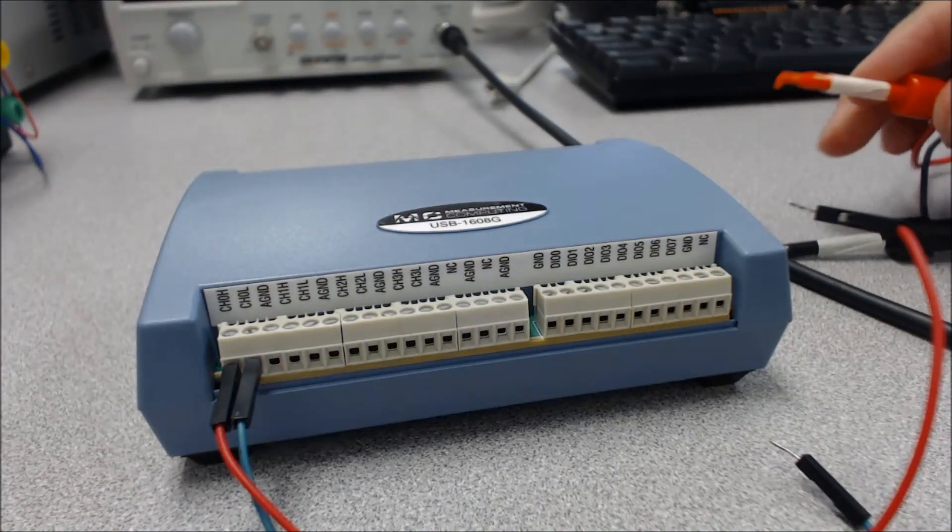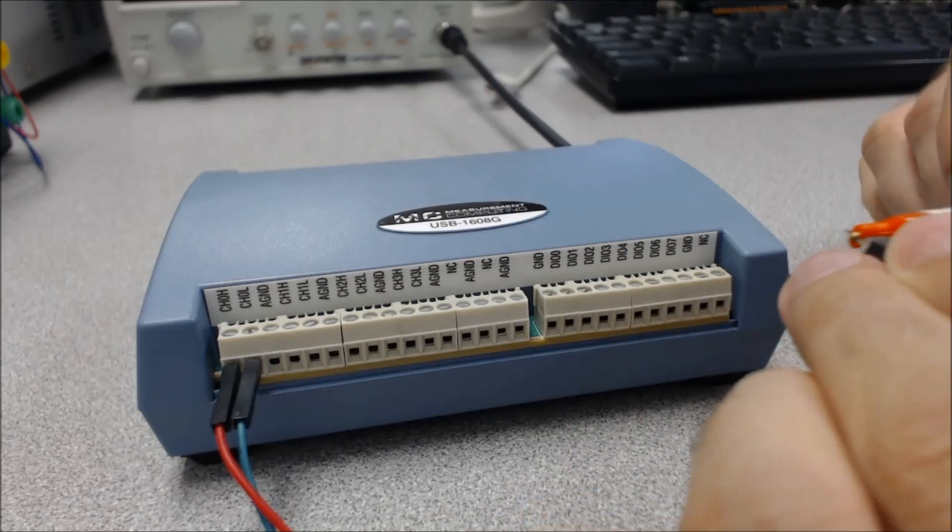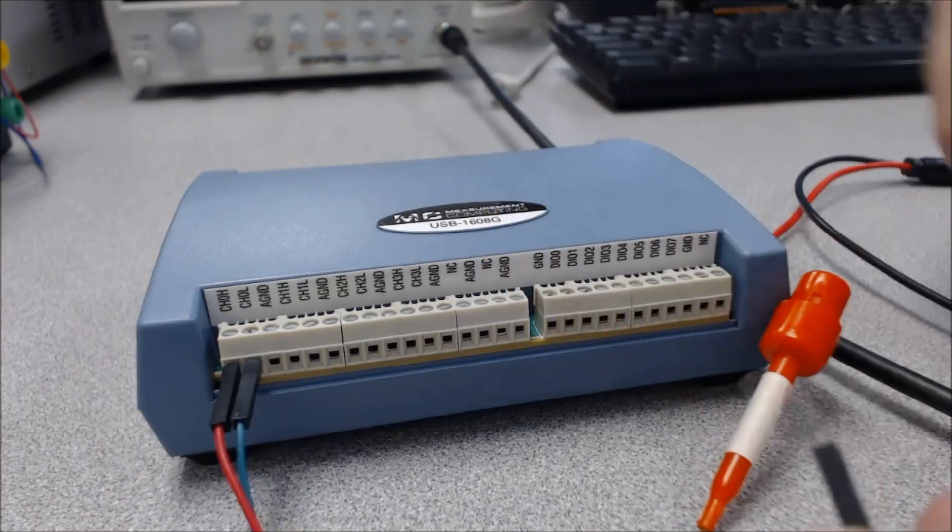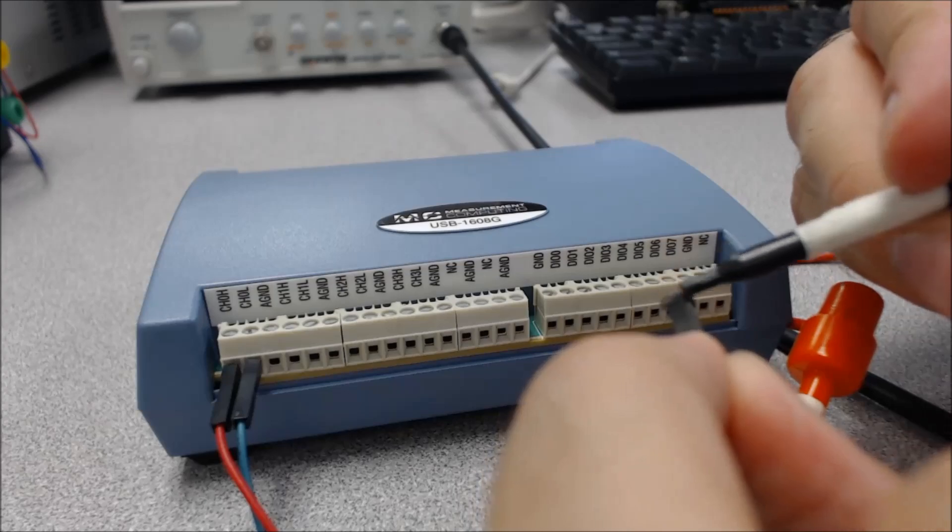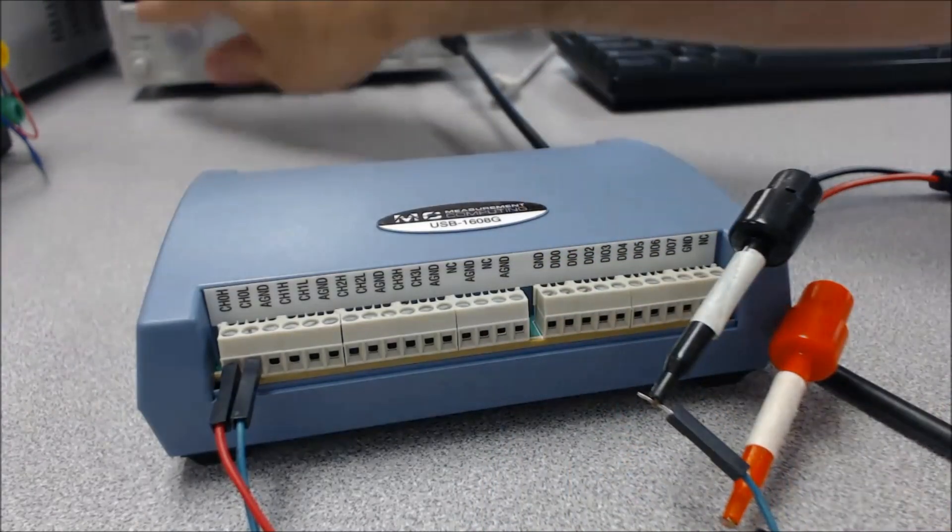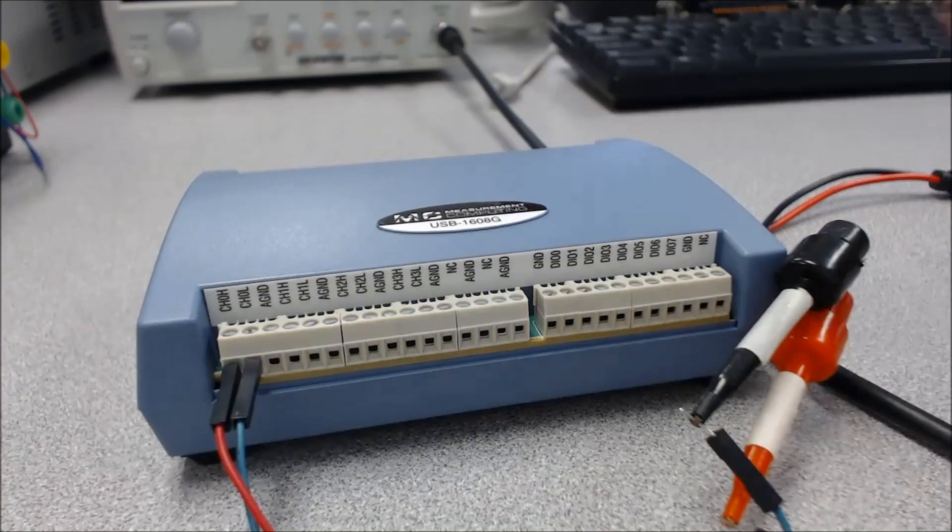But if we wanted to hook this system up to the function generator all we would have to do is connect our red wire to the high channel which I've connected a red wire to here and our low wire to the low wire from the function generator. And if we turn on our function generator now we'll be able to measure these signals using this data acquisition system.